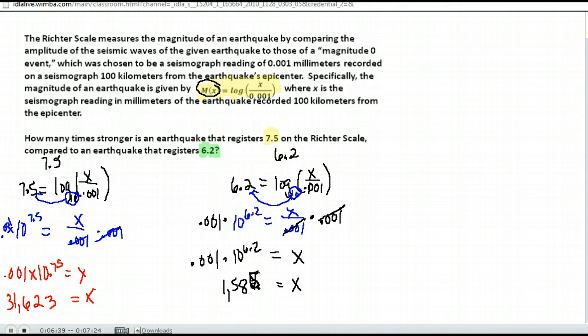Now the question asked how many times larger was the 7.5. So we're going to divide the two. We're going to take 31,623 divided by the 1,585 to find out how many times larger a 7.5 is compared to 6.2.